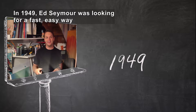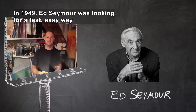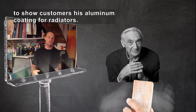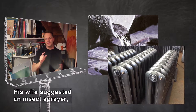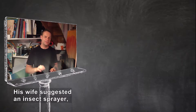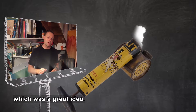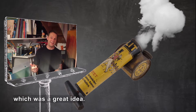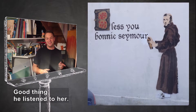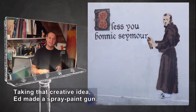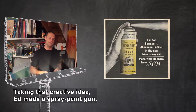In 1949, Ed Seymour was looking for a fast and easy way to show customers his aluminum coating for radiators. His wife suggested he use something like an insect sprayer, which was a great idea. Good thing he listened to his wife. Taking that creative idea, Ed made his own spray paint gun.